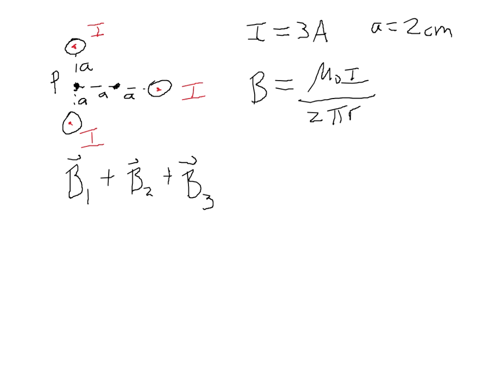We have to worry about not just the magnitude of the magnetic field, but also the direction. The magnitude of the magnetic field due to a long straight wire is given by B equals mu-zero I over two pi R, where R is the distance from the wire to the point in question.